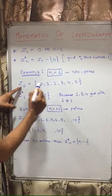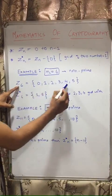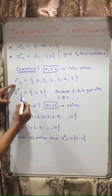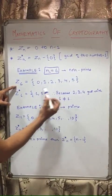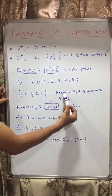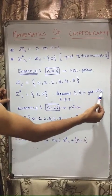Now Z6, 6 and 4, so gcd is 2, so it will also not be included. Now 6 and 5, the gcd is 1, so it will be included in the set. So because 2, 3, 4 gcd with 6 is not equal to 1, so we'll not include in Z star 6 set.